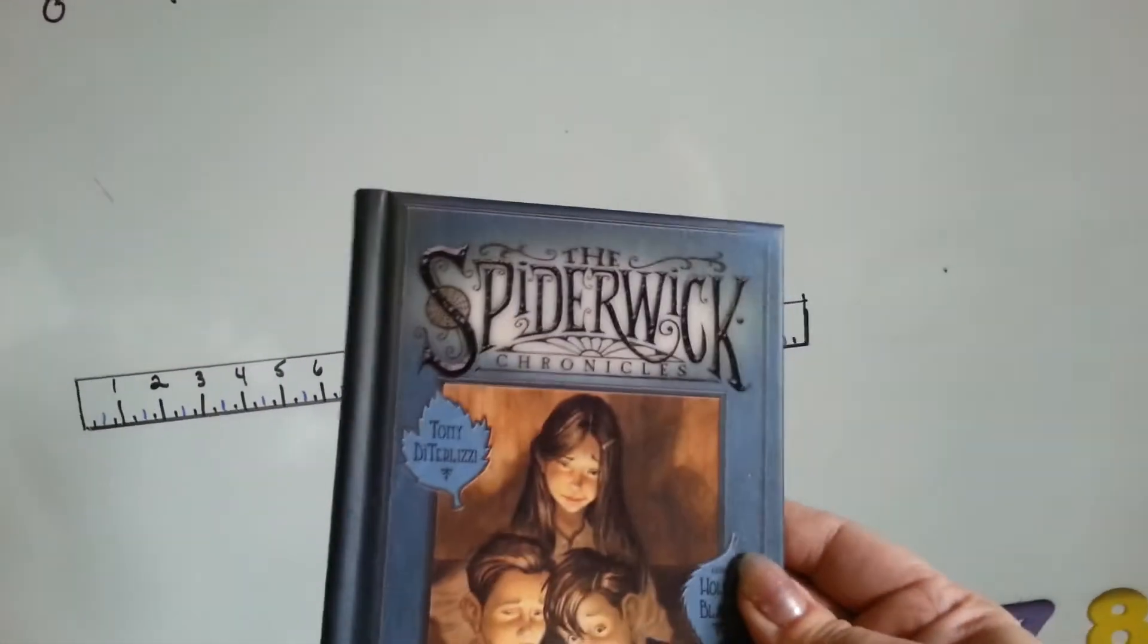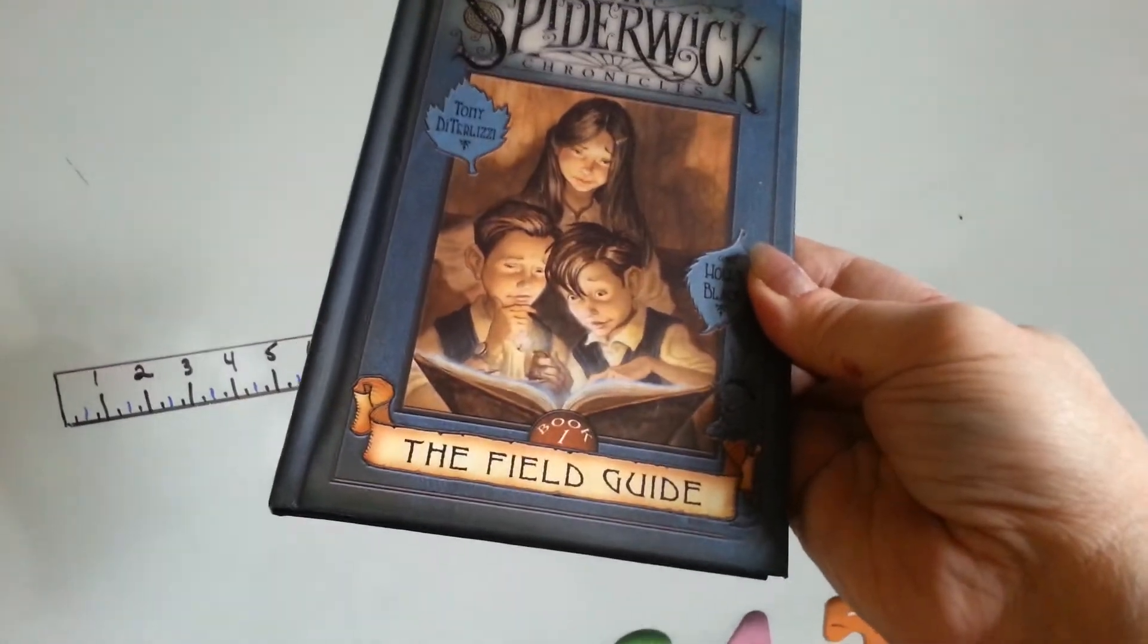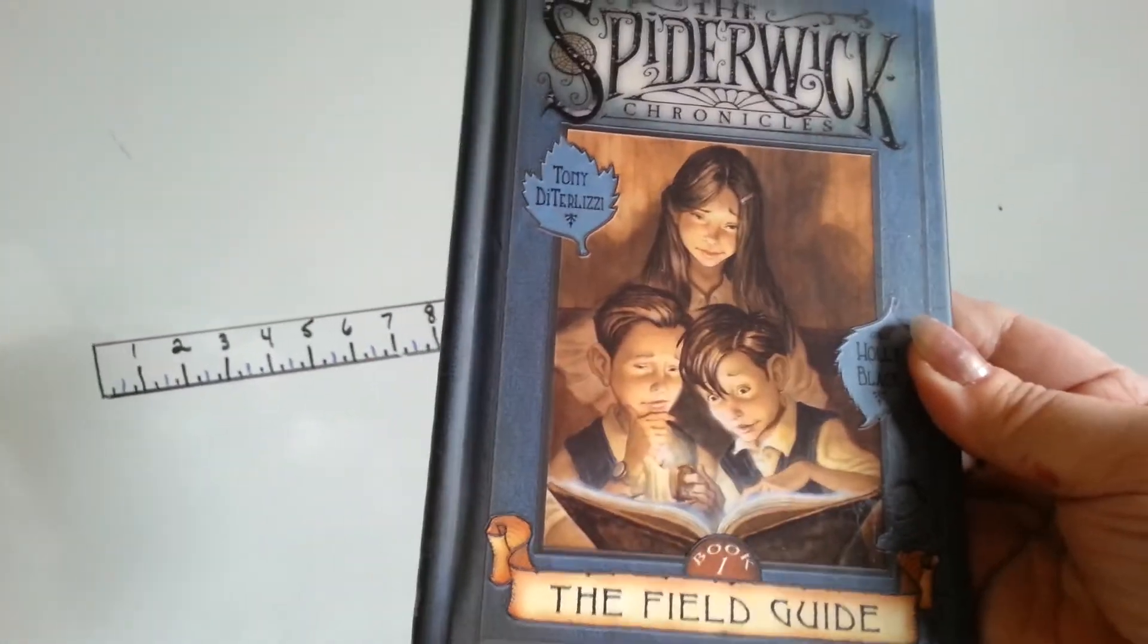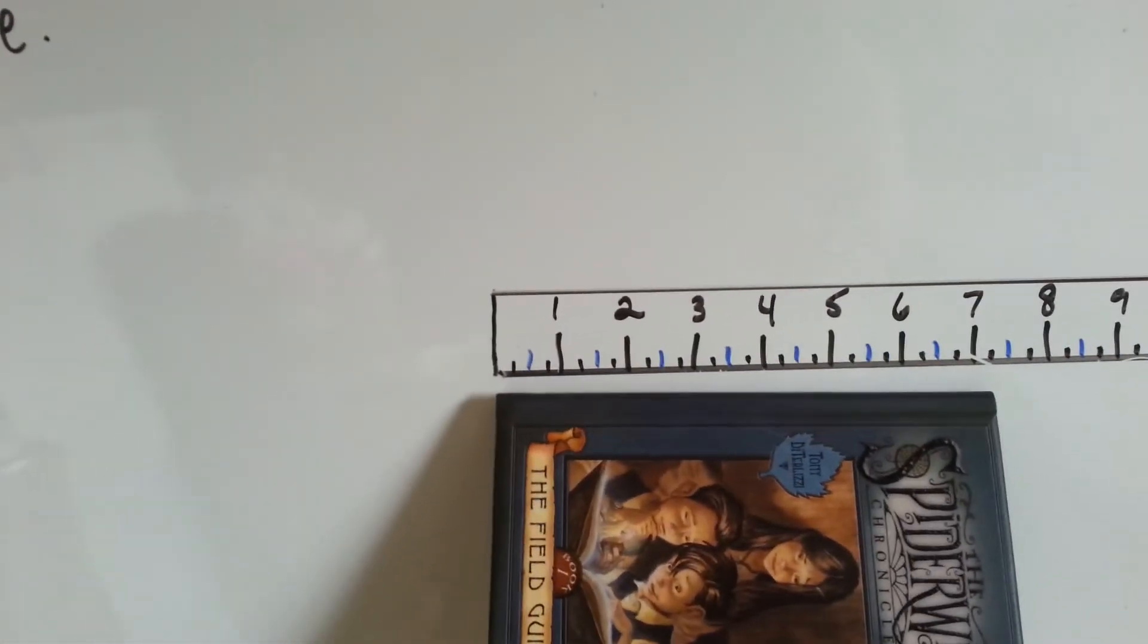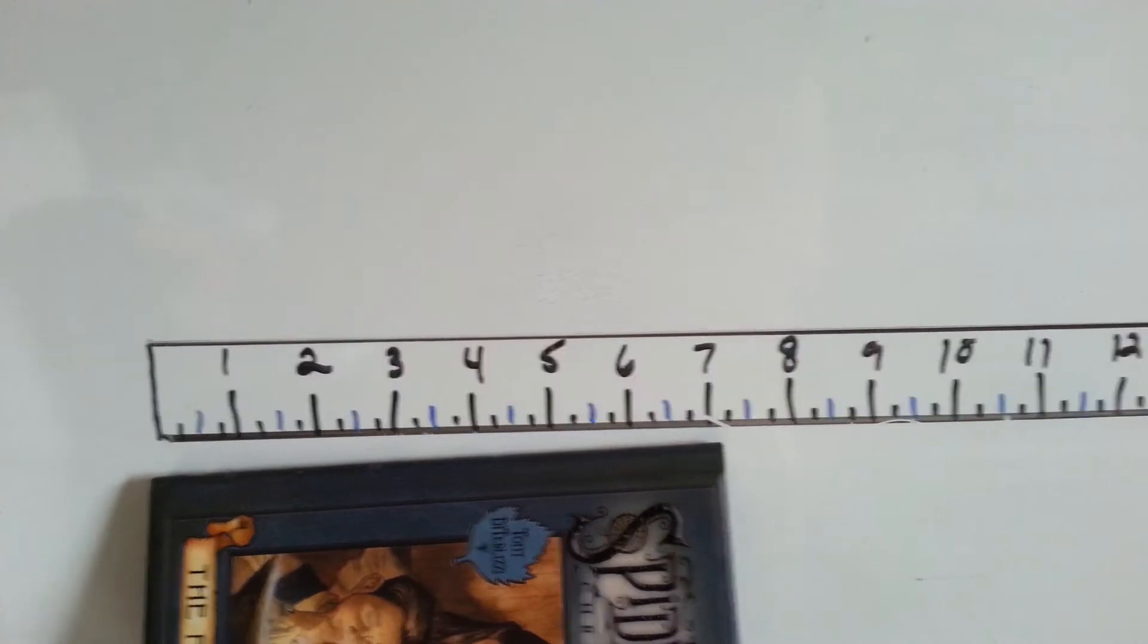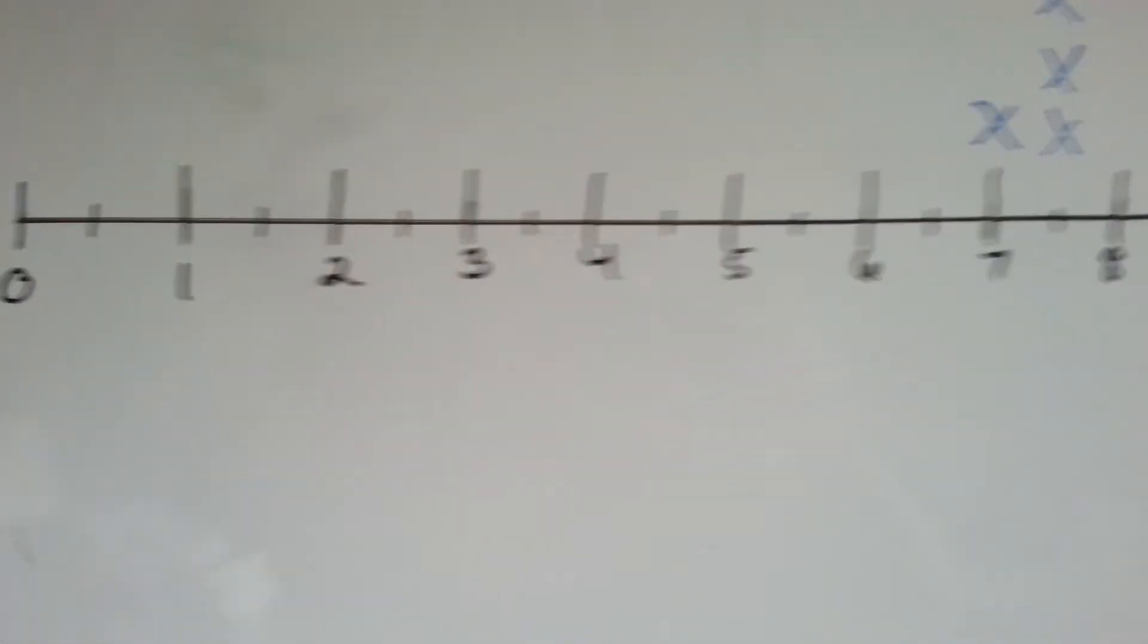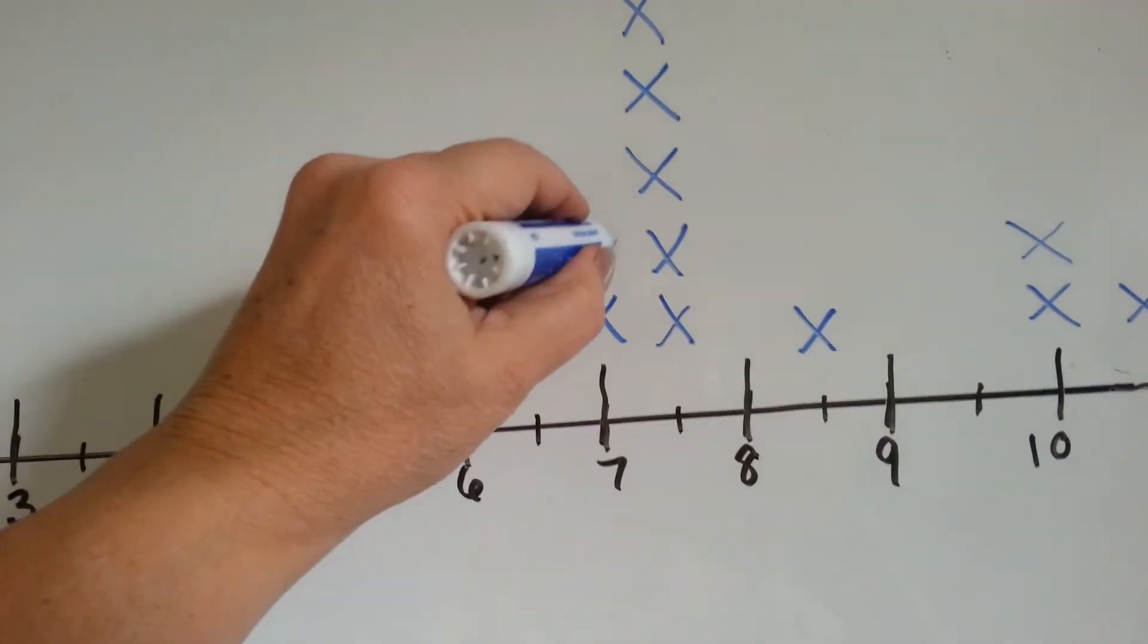We've got a couple more. Here we've got the Spiderwick Chronicles. This is a field guide. It's got little pictures of fairies and stuff in it. It's very cute. This is a hardcover. And it is 7 inches. 7 inches at the spine. So, let's put an x by the 7 inches.